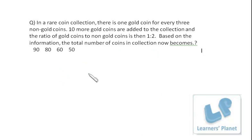Now we see this problem, a doubt sent by a student. In a rare coin collection there is one gold coin for every three non-gold coins. 10 more gold coins are added to the collection and the ratio of gold coins to non-gold coins is then 1 is to 2. Based on this information, the total number of coins in the collection now becomes...